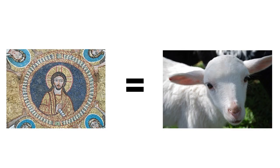For example: Jesus Christ is a lamb. The topic is Jesus Christ and the image is the lamb. The lamb is an animal that is meek, gentle, and harmless. Thus, Jesus Christ is portrayed as being meek, gentle, and harmless.